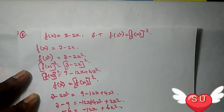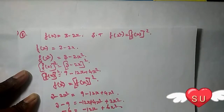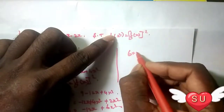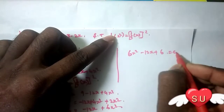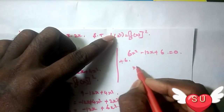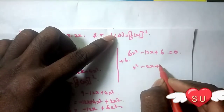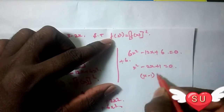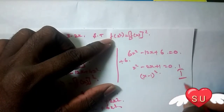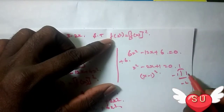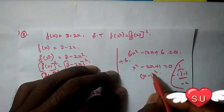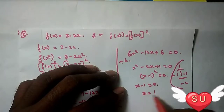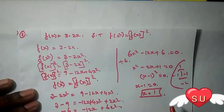So the equation is 6x² minus 2Lx plus 6 equals 0. Dividing the equation by 6: x² minus 2x plus 1 equals 0. This factors as (x minus 1)² equals 0. Therefore x minus 1 equals 0, so x equals 1. Okay friends, your x value is 1.